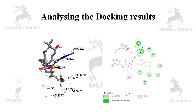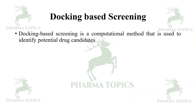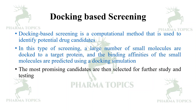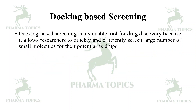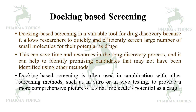Docking-based screening is a computational method used to identify potential drug candidates. A large number of small molecules are docked to a target protein and their binding affinities are predicted using docking simulation. The most promising candidates are then selected for further study and testing. It is a valuable tool because it allows researchers to quickly and efficiently screen large numbers of small molecules, saving time and resources, and can identify promising candidates not found using other methods.